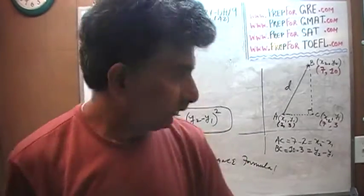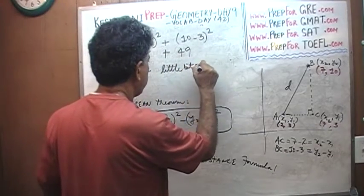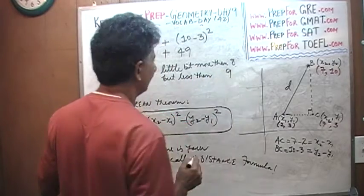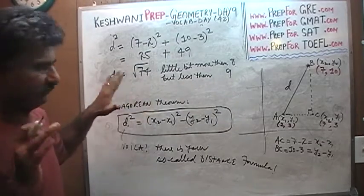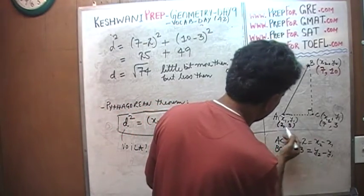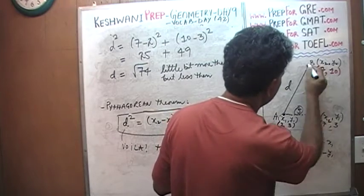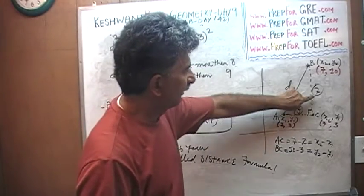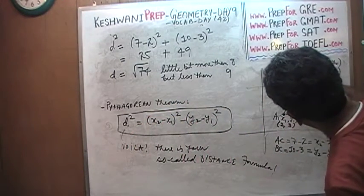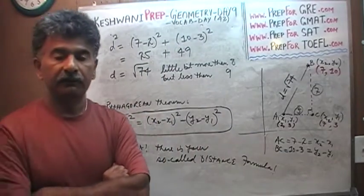There you go, that's it. This distance from A to B is the square root of 74, which is a little bit more than 8 but less than 9, because 8 squared would be 64 and 9 squared would be 81. A to C is 5, C to B is 7. So if you have a triangle with sides 5 and 7, the hypotenuse turns out to be the square root of 74. This is your so-called distance formula, which is nothing but simple Pythagorean theorem.